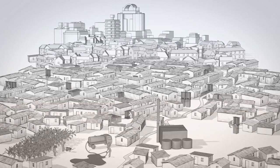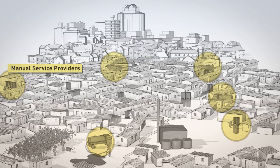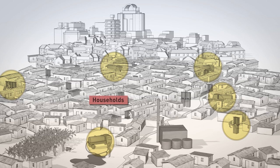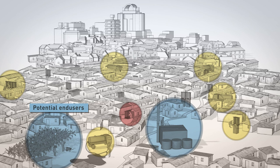Let's start with the identification of the stakeholders. First, of course, you have the mechanical and manual emptiers. Then, you have the households — in a way, the customers — which we could divide into landlords and tenants. Moving to the other end of the sanitation chain, you have the potential end users, like farmers or industries that may use sludge as a fuel.